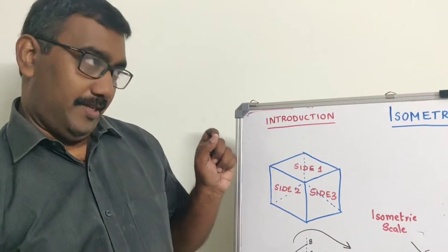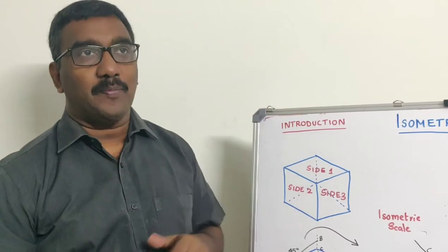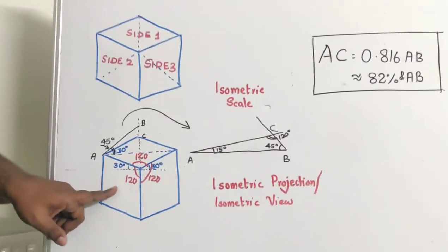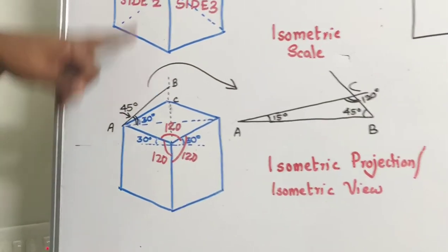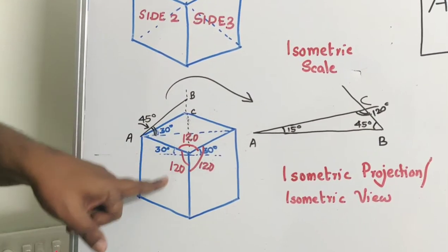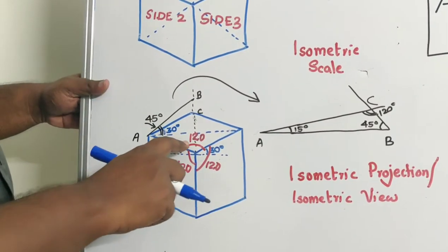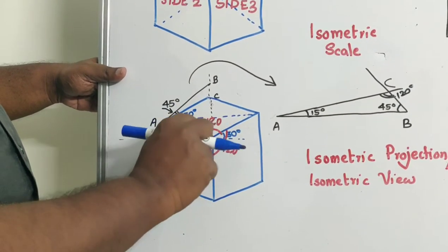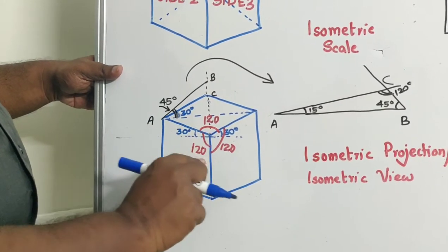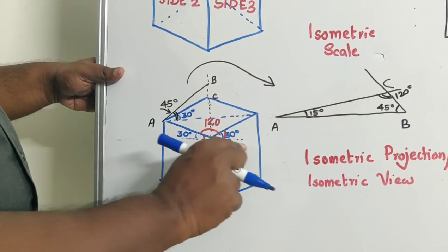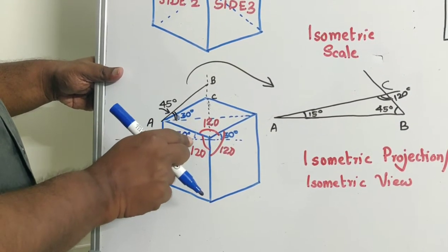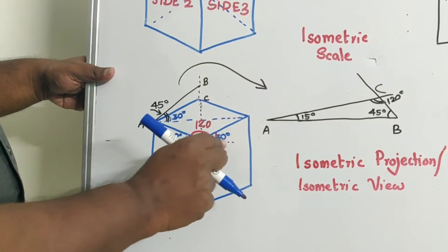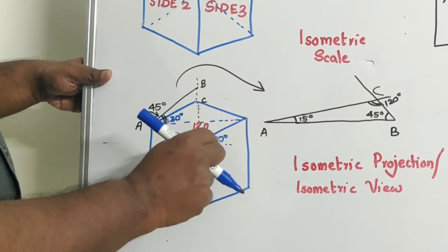Now, what is the importance of this particular figure in isometric projection? In this particular figure, you can see all the sides of this solid are at an angle of 120 degrees — they are mutually at 120 degrees. If I am having a horizontal line like this, then with the horizontal line, this angle is 30 degrees, because this part is 90 and this part is 30, totalling 120. Similarly, you will get the other side also as 90 plus 30. So I have marked that 30.